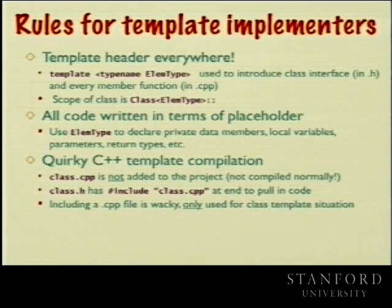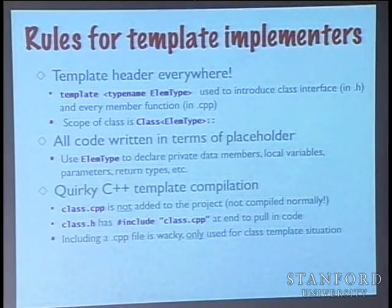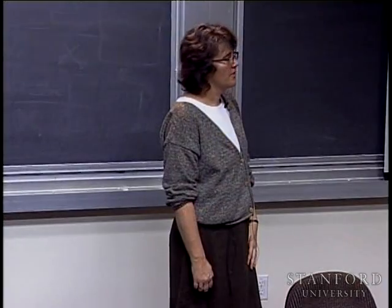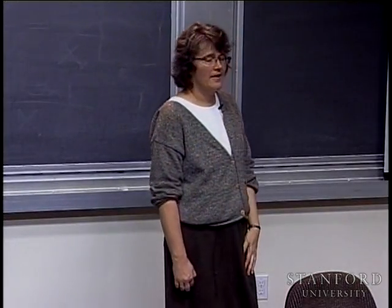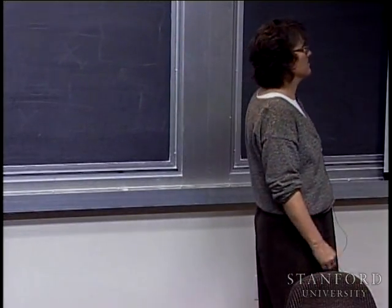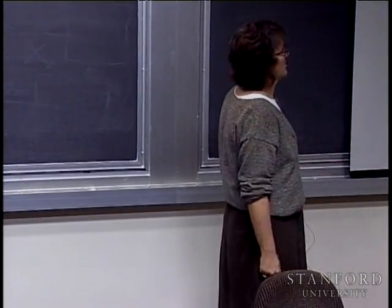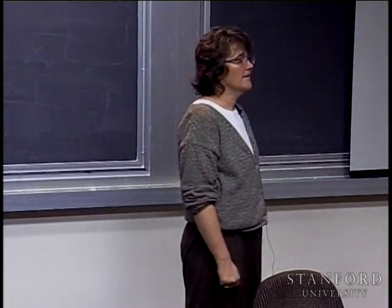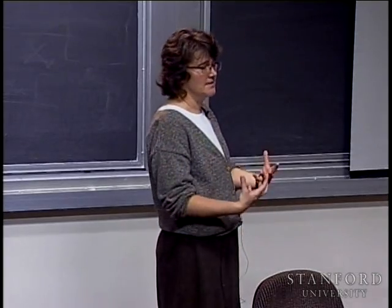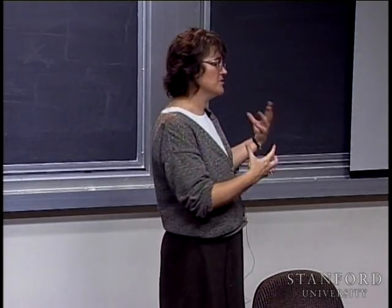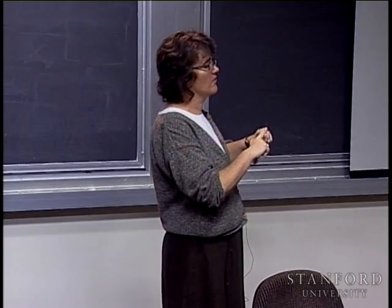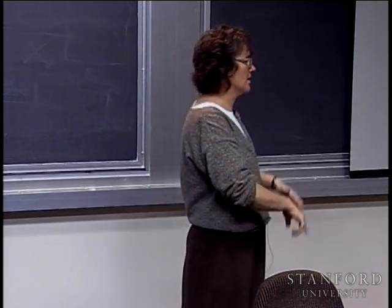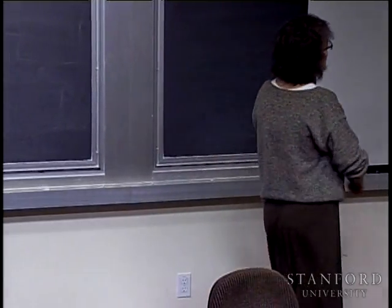Just to remind you about the things that have to happen: the template type-name element-type header gets placed all over the place when you make that change. The first place it appears is in the .h on the class interface. You'll say 'template typename ElemType class Vector' — or stack, or whatever you're building — which means the class is a template type whose name will only really exist in the form 'vector angle-bracket string close-angle-bracket' from that point on.